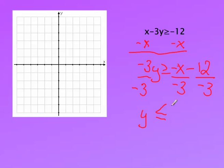So we have y is less than or equal to. Remember, we've got negative divided by negative, so it's going to be a positive one-third x plus 4.